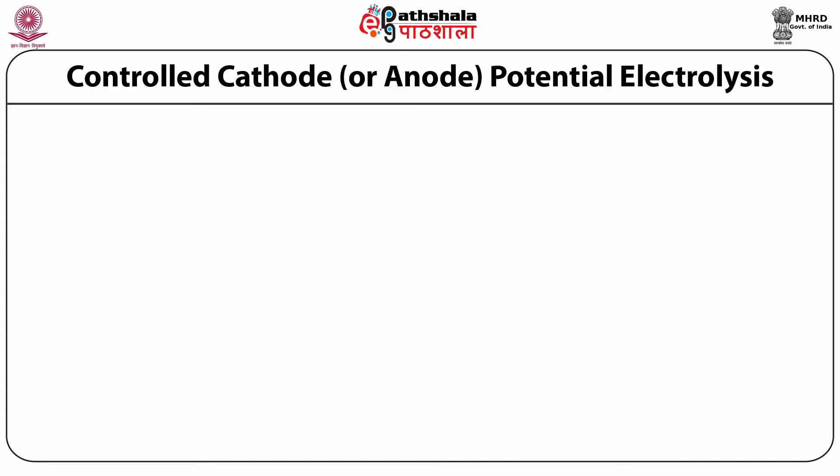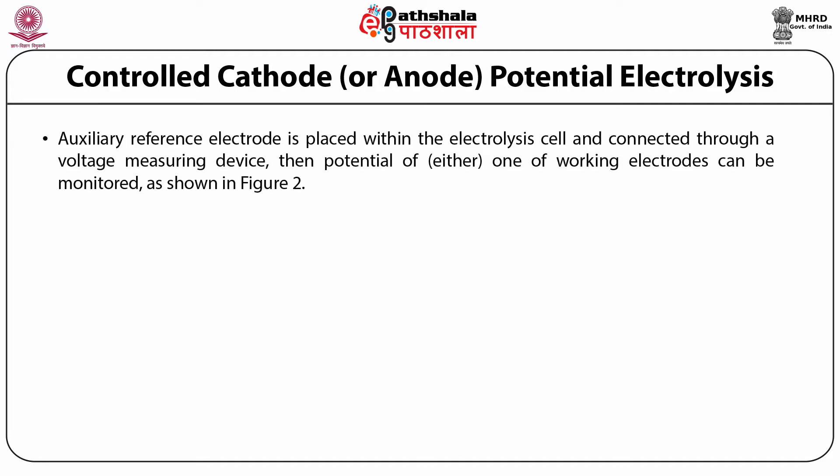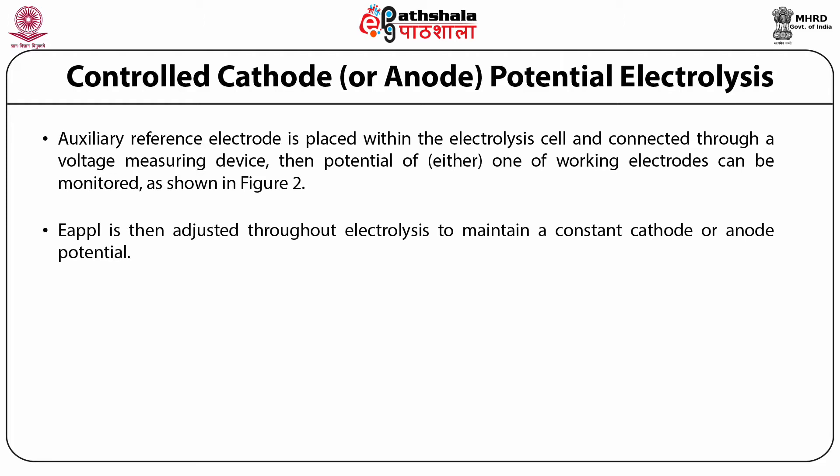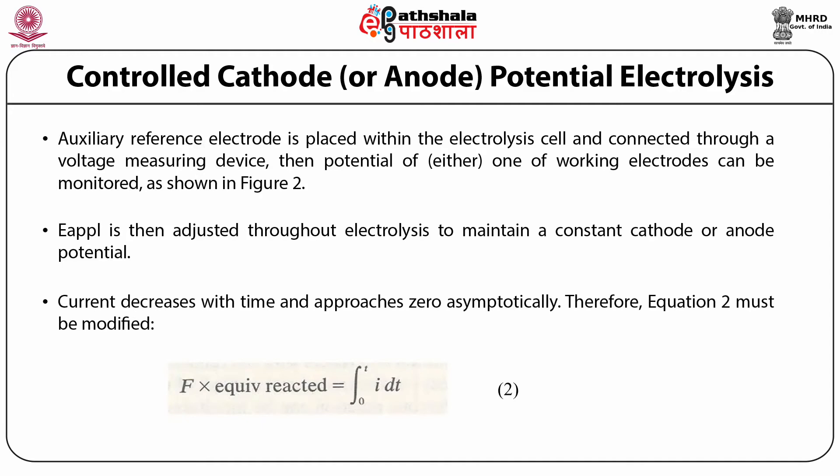If a third electrode, called the auxiliary reference electrode, is placed within the electrolysis cell and connected through a voltage measuring device, then the potential of either one of the working electrodes can be monitored as shown in the figure. The applied potential is then adjusted throughout the electrolysis to maintain a constant cathode or anode potential. In this way, we can be sure that only a single reaction is taking place and that the number of coulombs passed is directly related to the substance to be determined. However, the current decreases with time and approaches zero gradually, so equation one must be modified by integration to obtain equation two.